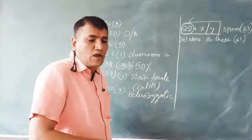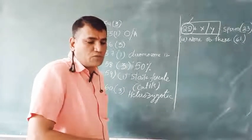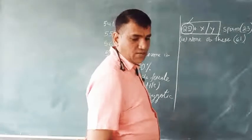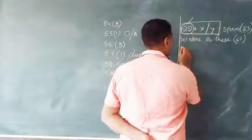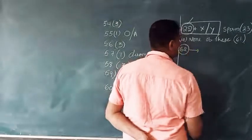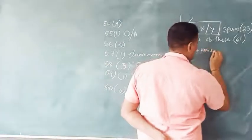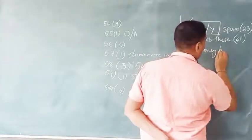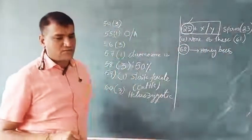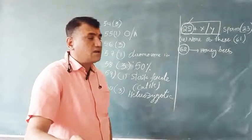Question 62: Males have half the number of chromosomes compared to females. This type of sex determination is the characteristic feature of honeybees. In honeybees, males (drones) are haploid and females (queens/workers) are diploid. Answer: honeybees.